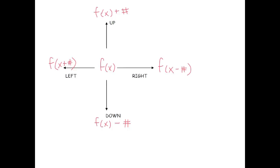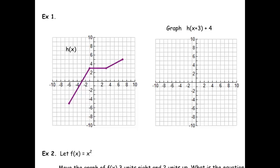Let's do an example. We're given a new graph called h of x. Instead of words, I've told you algebraically what to do. Notice what happens to the x value — we have x plus a number. According to our notes, x plus a number means we move it left. So this means left three units. The last part, plus a number at the end, means move it up — so we want to move this graph up four spaces. We just had to figure out what direction the algebra was telling us.